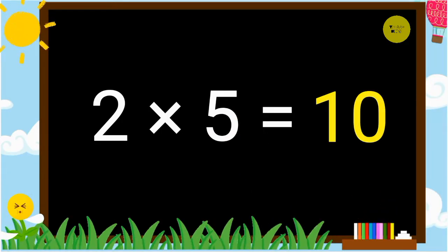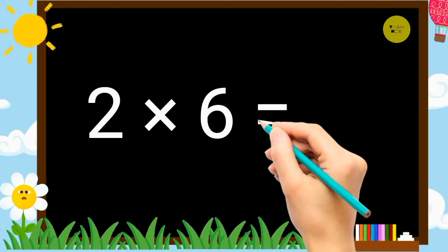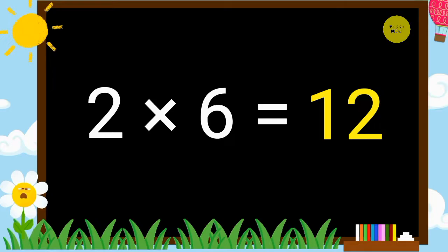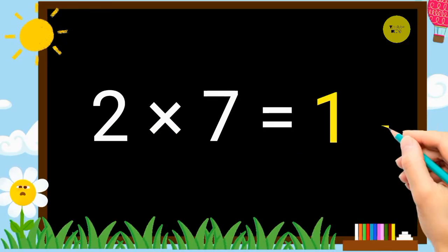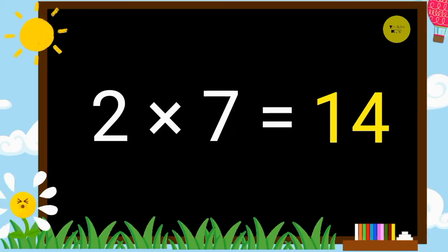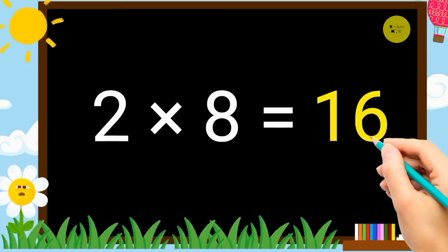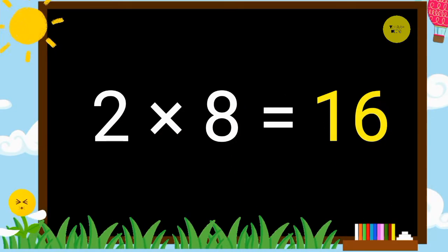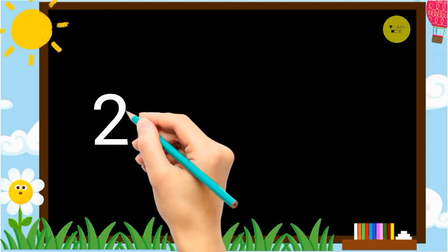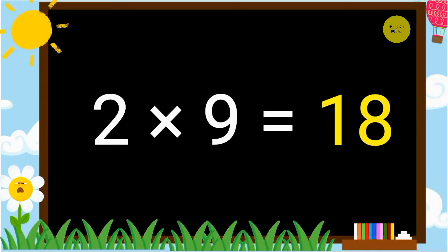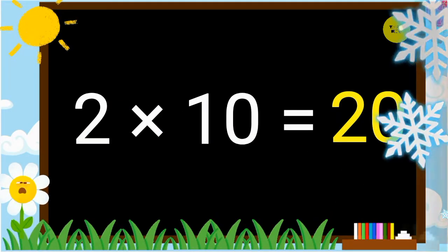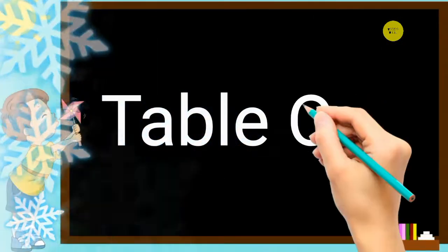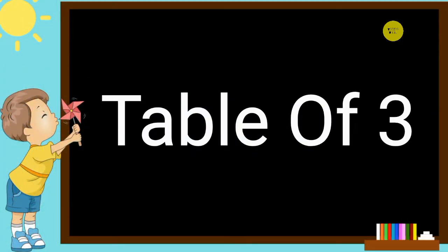2 6's a 12. 2 7's a 14. 2 8's a 16. 2 9's a 18. 2 10's a 20. Table of 3.